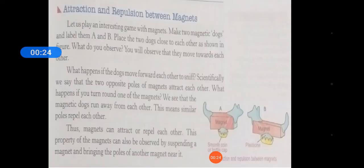Attraction and repulsion between magnets. Let us play an interesting game with magnets. Make two magnetic dogs and label them A and B. Place the two dogs close to each other.